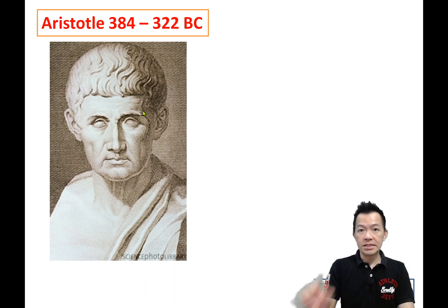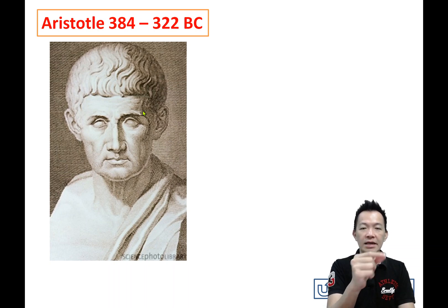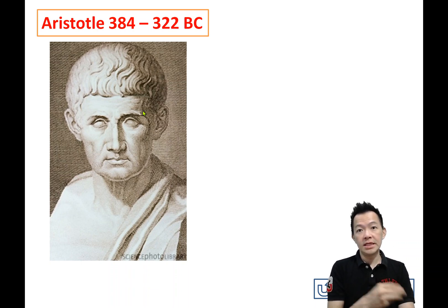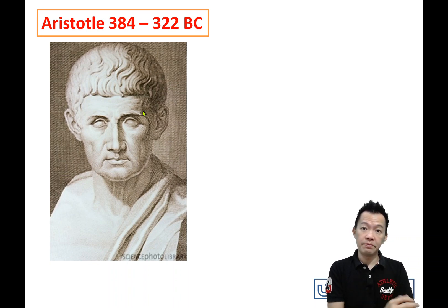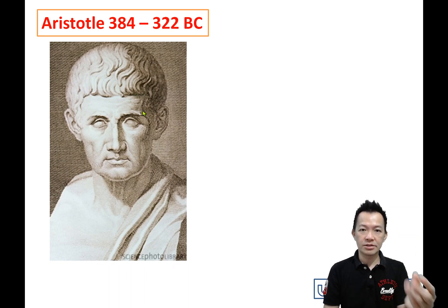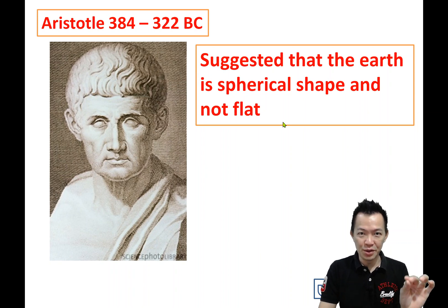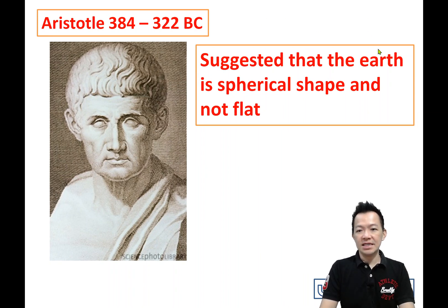His contribution is just one sentence: the Earth is round, not flat. So copy on your notes: Aristotle suggested that the Earth is spherical in shape and not flat. Just one sentence, and he became famous until today. That time, saying this sentence was absolutely not simple.